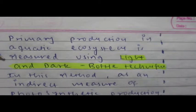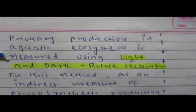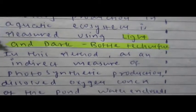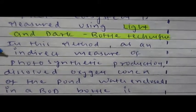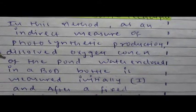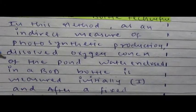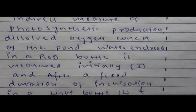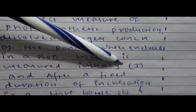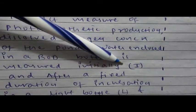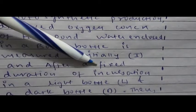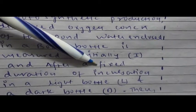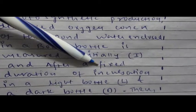Primary production in aquatic ecosystem is measured using light and dark bottle technique. In this method, as an indirect measure of photosynthetic production, dissolved oxygen concentration of the pond water enclosed in BOD bottle is measured initially, denoted as I, and after a fixed time interval of incubation, let's take the time interval as one hour.